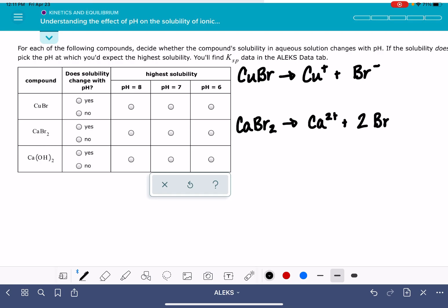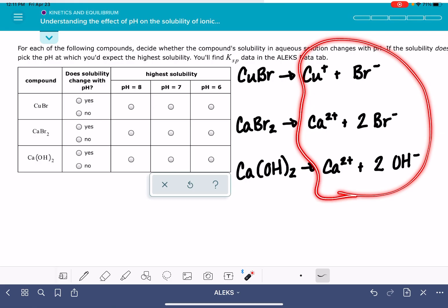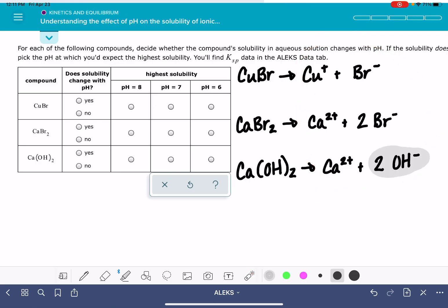Once you get the dissociation reactions written out, we're going to be analyzing the cations and anions that are produced when each one of these compounds dissociates. Specifically, we're going to be looking for cations or anions that are strong bases or strong acids. The only strong base or strong acid that I have among all of these cations is the hydroxide ion. And so far, all of these ALEKS problems that I've looked at, the only strong acid or strong base that's ever being produced is the hydroxide ion.